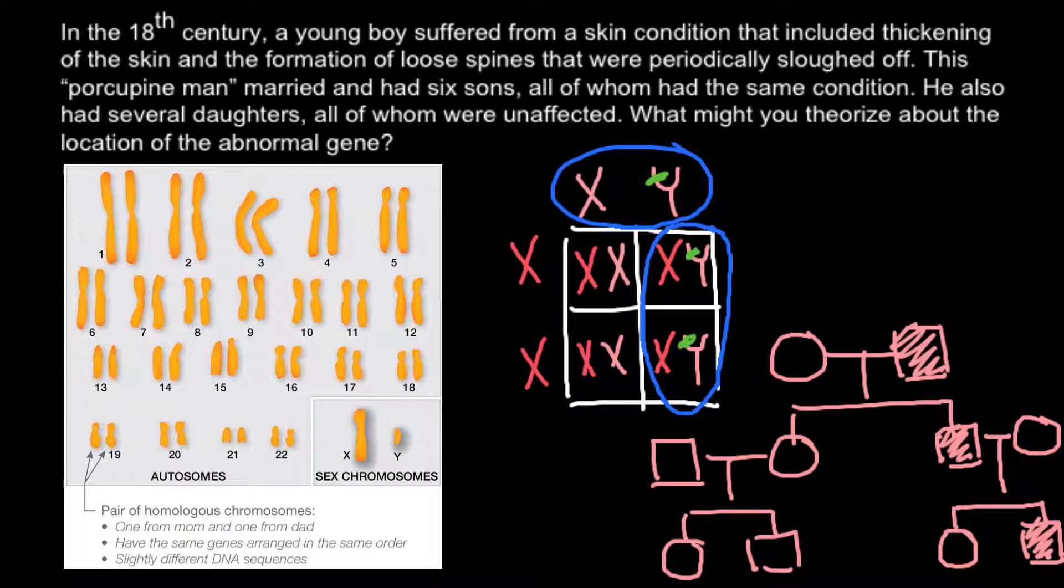But in Y-linked genetic disorder, we would see a pattern like this one. Such genetic disorders are very rare because there are not so many genes on the Y chromosome, as you see. The Y chromosome is one of the smallest chromosomes in the human karyotype.